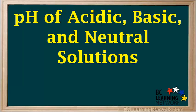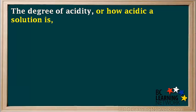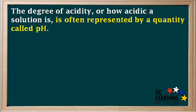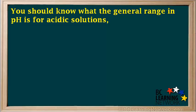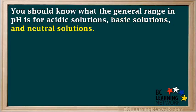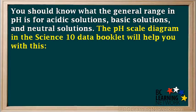Now we'll see what the general pH ranges are for acidic, basic, and neutral solutions. The degree of acidity, or how acidic a solution is, is often represented by a quantity called pH. Notice that pH is a small p and a capital H, and pH is just a number — there's no unit for it. You should know what the general range in pH is for acidic, basic, and neutral solutions. The pH scale diagram in the Science 10 data booklet will help you with this.